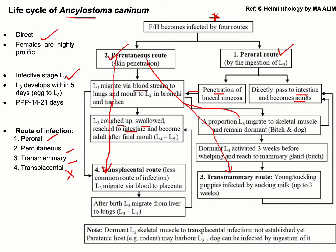During migration via the bloodstream, some L3 move to the skeletal muscle and remain there in a dormant condition. These inactivated larvae become activated around three weeks before parturition, and they then move to the mammary gland as L3.